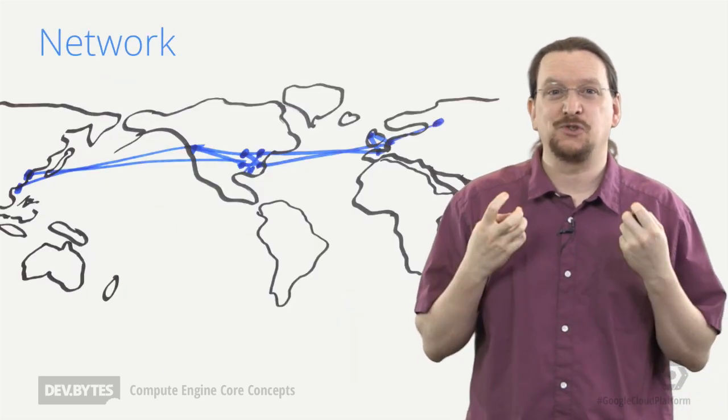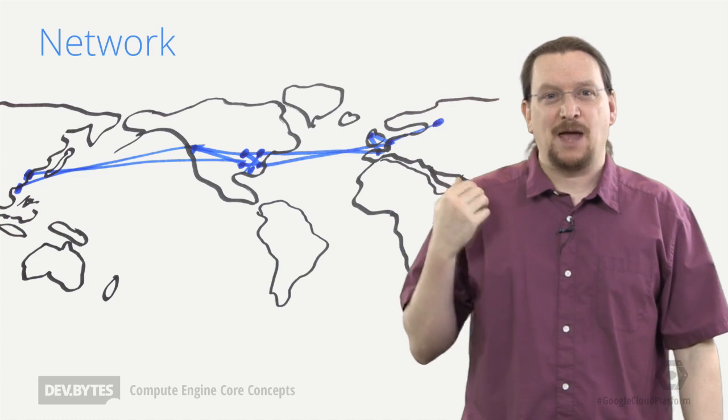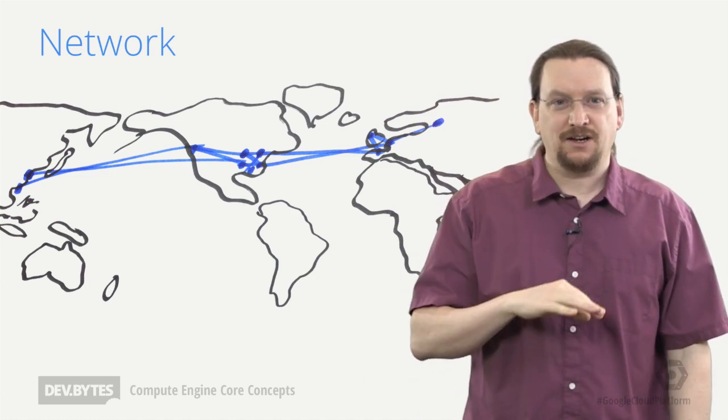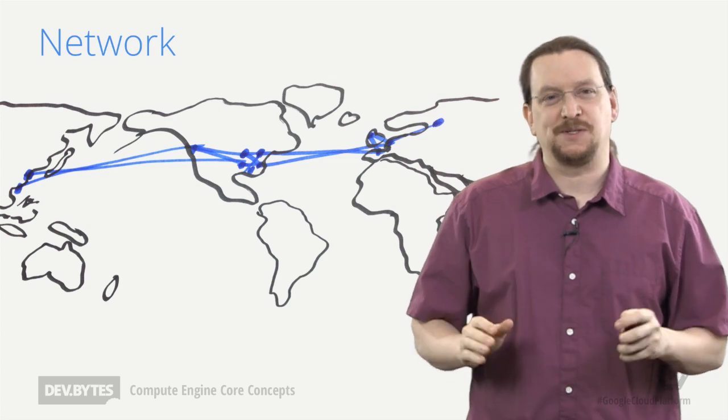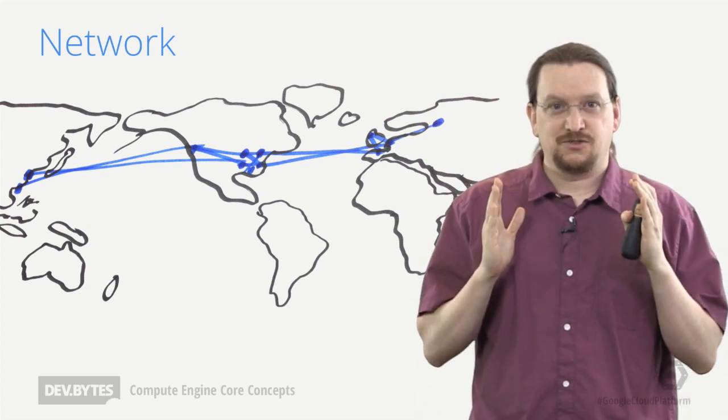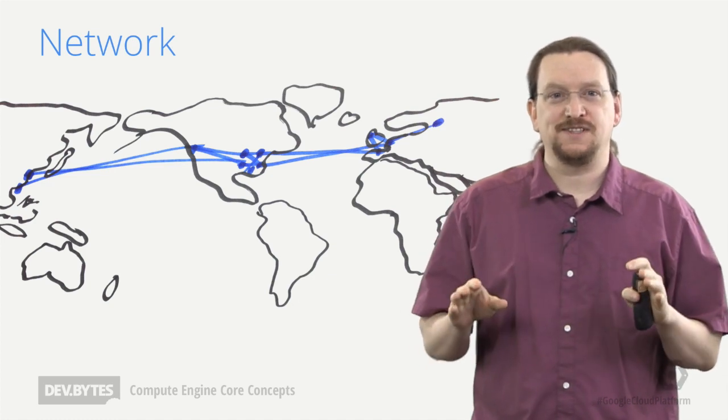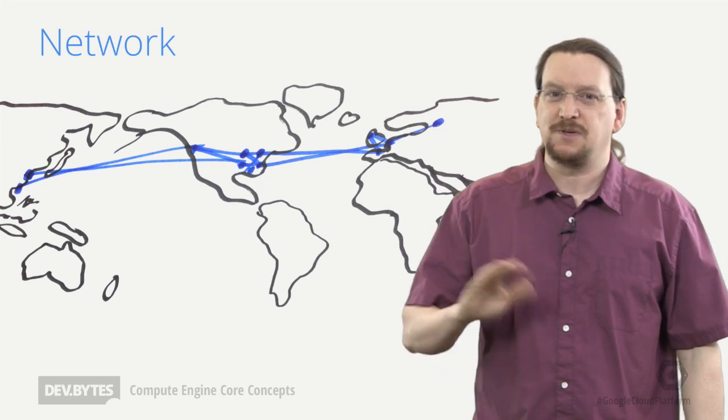So the network. And the network is Google's network. It's the same network we use to serve all of our products. And we work very hard to get traffic from the internet onto our dedicated infrastructure and get it to your virtual machines as quickly as possible. And your part of this network is private to your project. All of your virtual machines can see each other on the same network, but nobody else can see your project, and you can't see anyone else's.